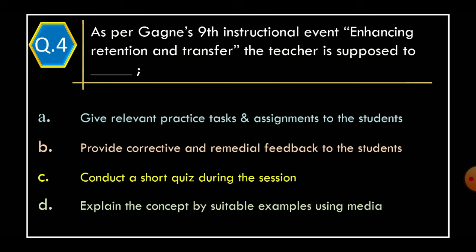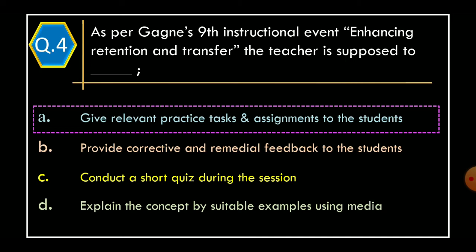Question 4. As per Gagné's ninth instructional event, enhancing retention and transfer, the teacher is supposed to: Option A. Give relevant practice tasks and assignments to the student. Option B. Provide corrective and remedial feedback to the student. Option C. Conduct a short quiz during the session. Option D. Explain the concept by suitable examples using media. The correct option is Option A: Give relevant practice tasks and assignments to the students.